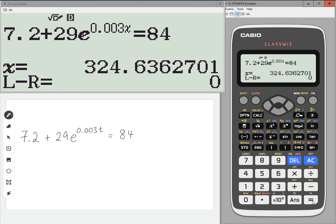And so here we're getting T, in our case, is 324.6362701. And then you can round that to whatever degree of accuracy you like.